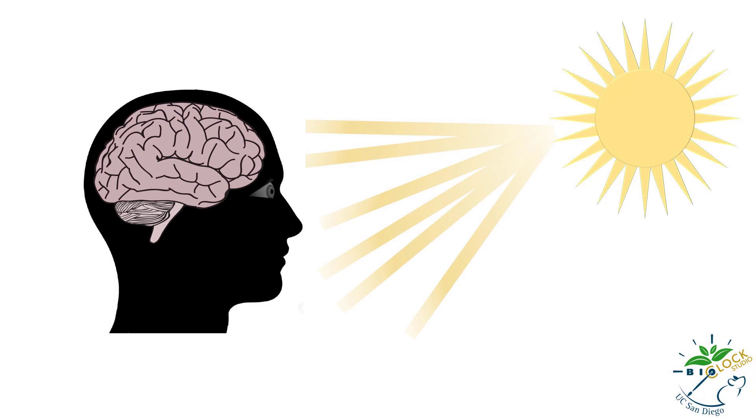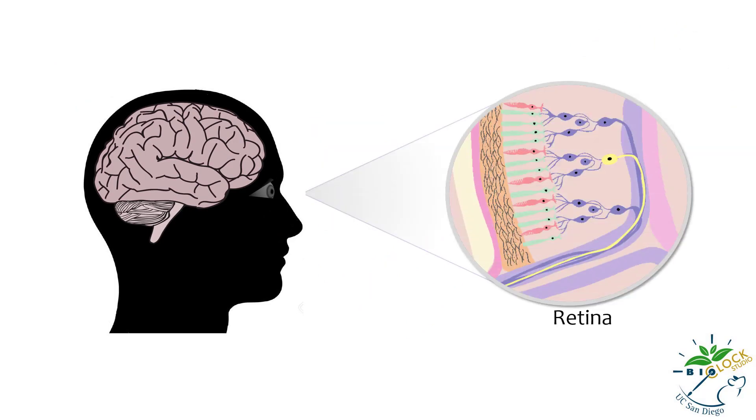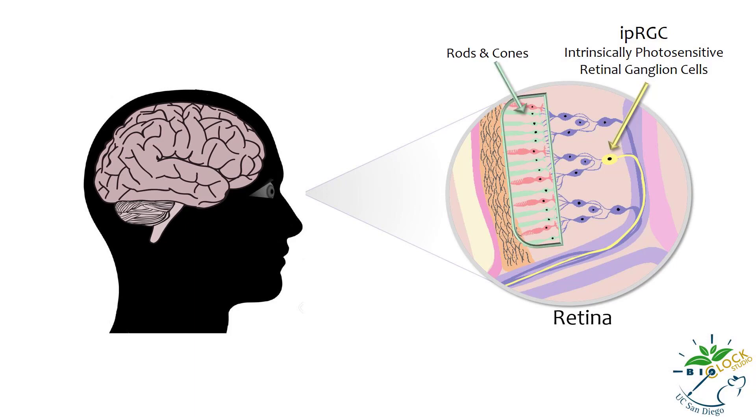When light enters the eye, specialized cells in the retina expressing the photopigment melanopsin and called intrinsically photosensitive retinal ganglion cells, or IPRGCs, are activated by light. IPRGCs are activated indirectly via inputs from the rods and cones that form images, but also directly by responding to light on their own.